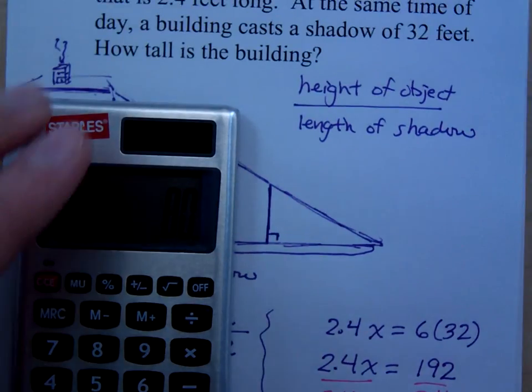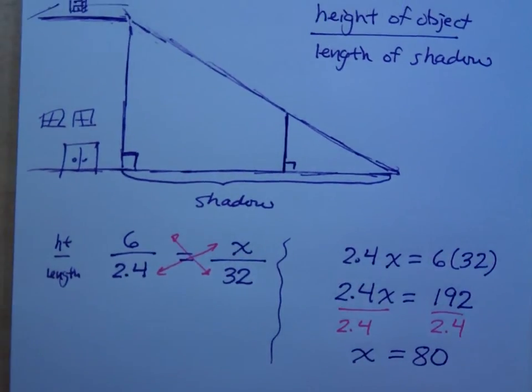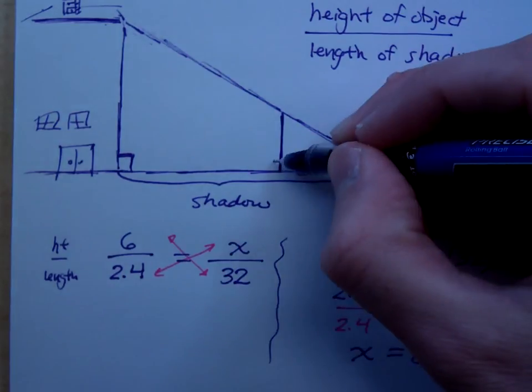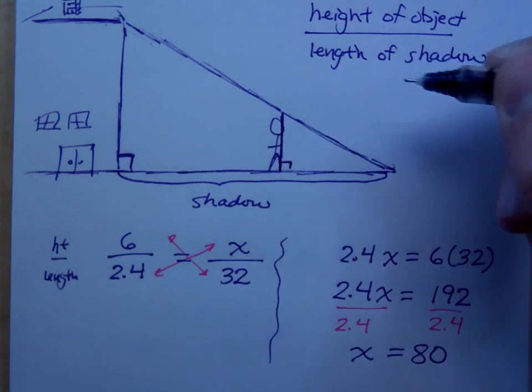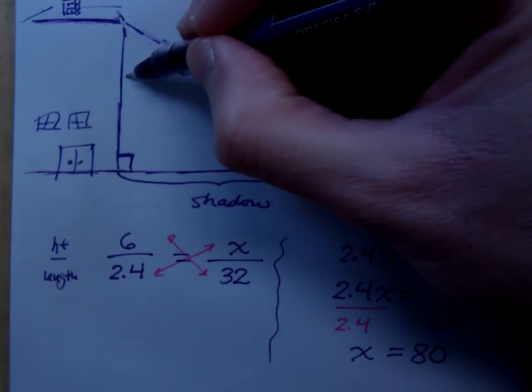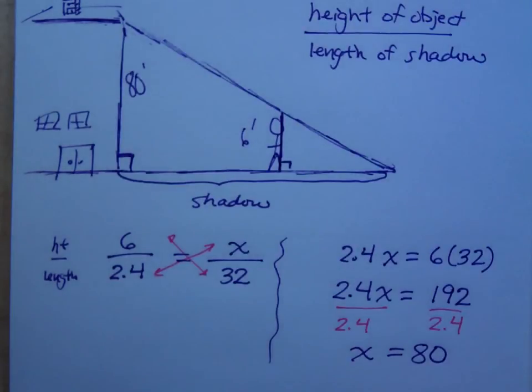Now does that make sense with what we were talking about before? We said the height of the building should be a lot taller than the height of the person, right? So we're saying that here is, here's Stick Boy right here. He's 6 feet tall. We're saying the building is 80 feet tall.